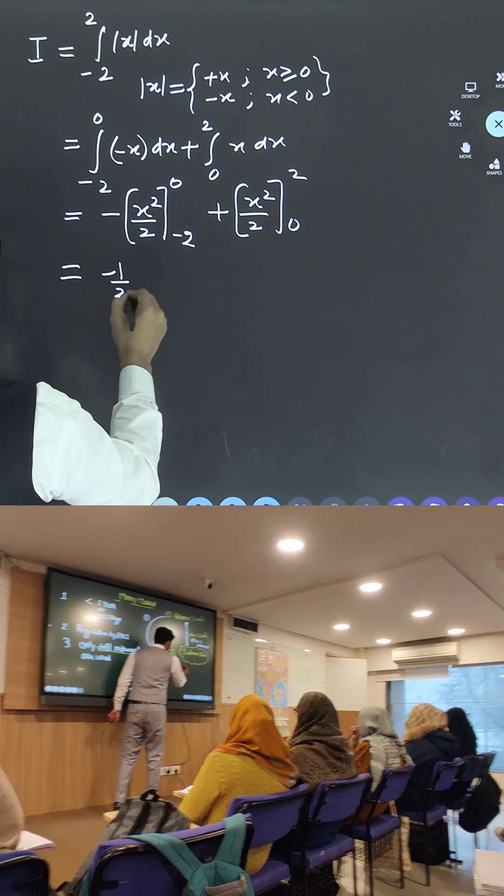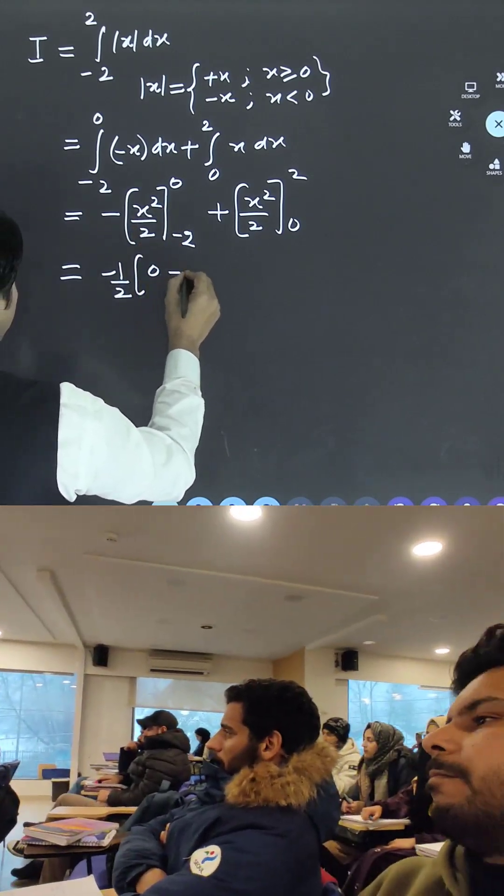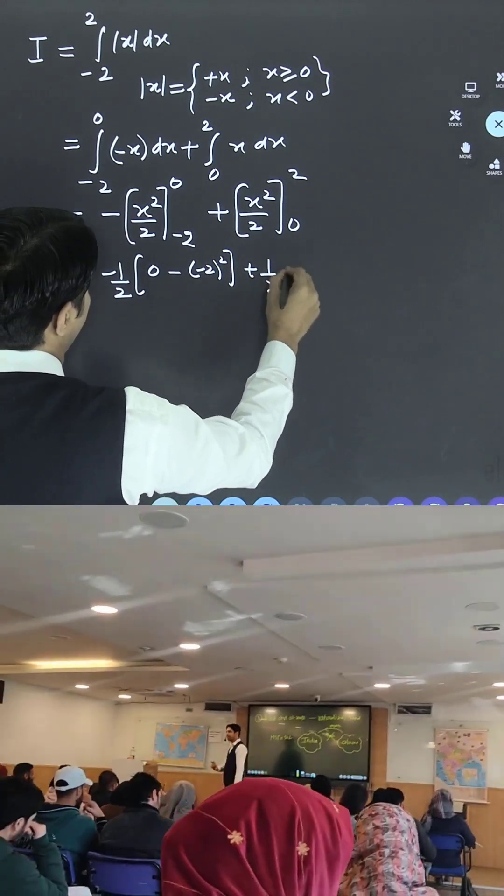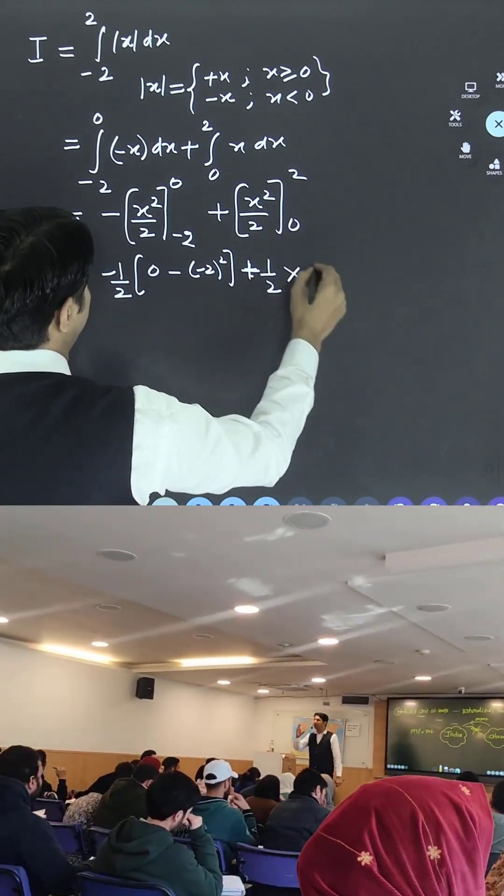So this is minus 1 by 2, bracket start, upper limit 0 minus of minus 2 square, plus 1 by 2, this is plus into 4.